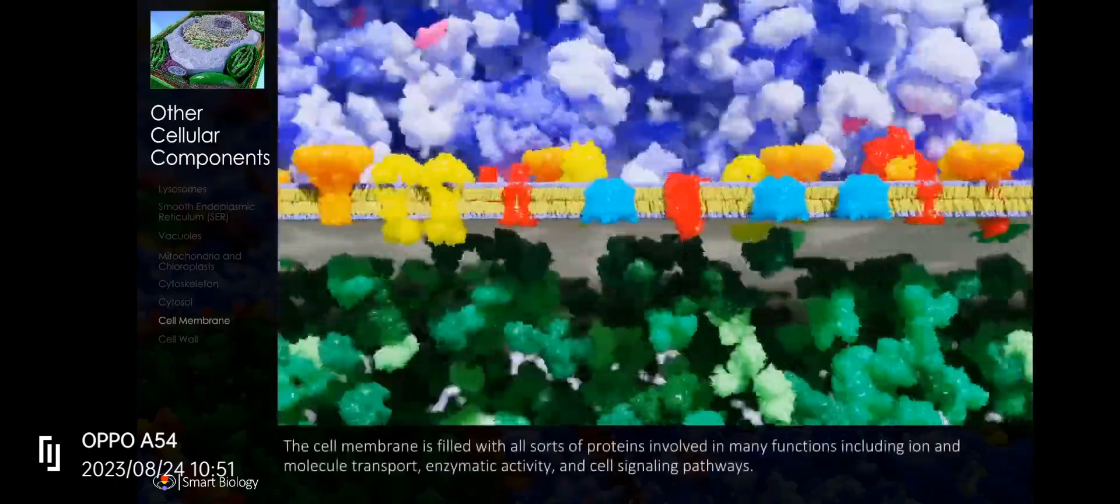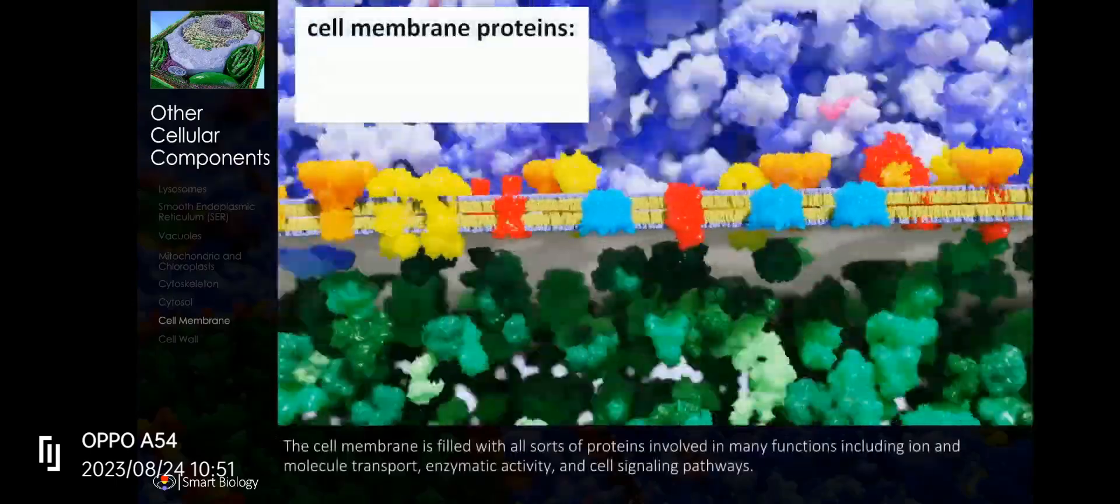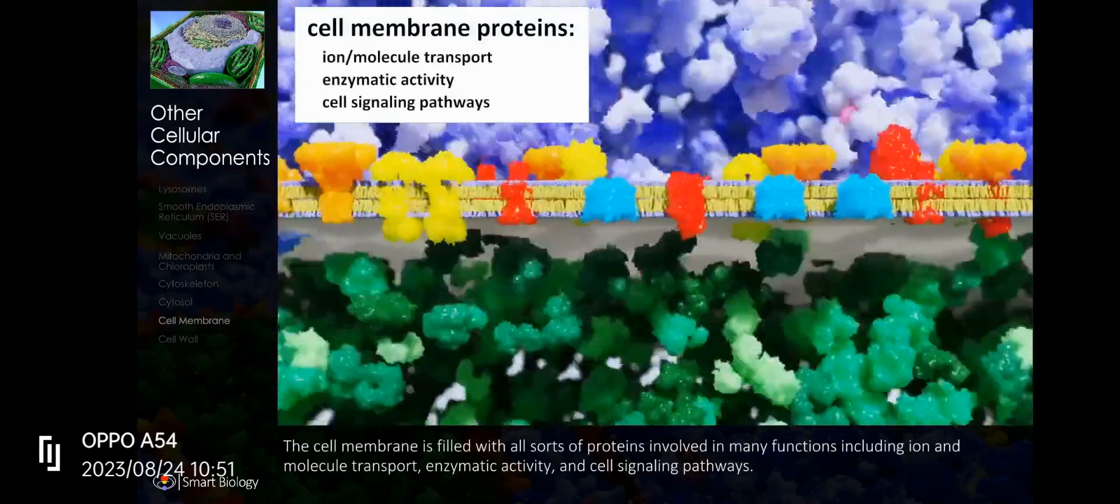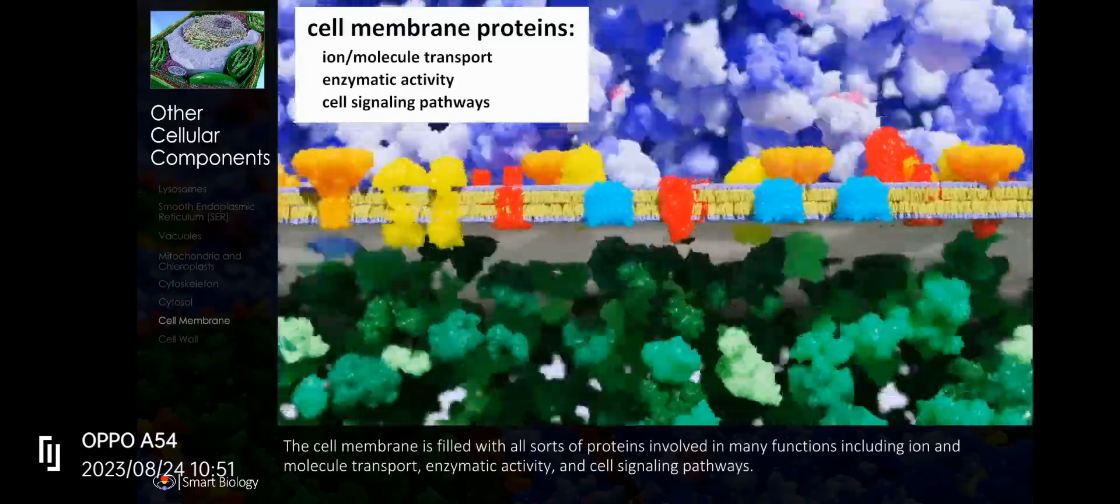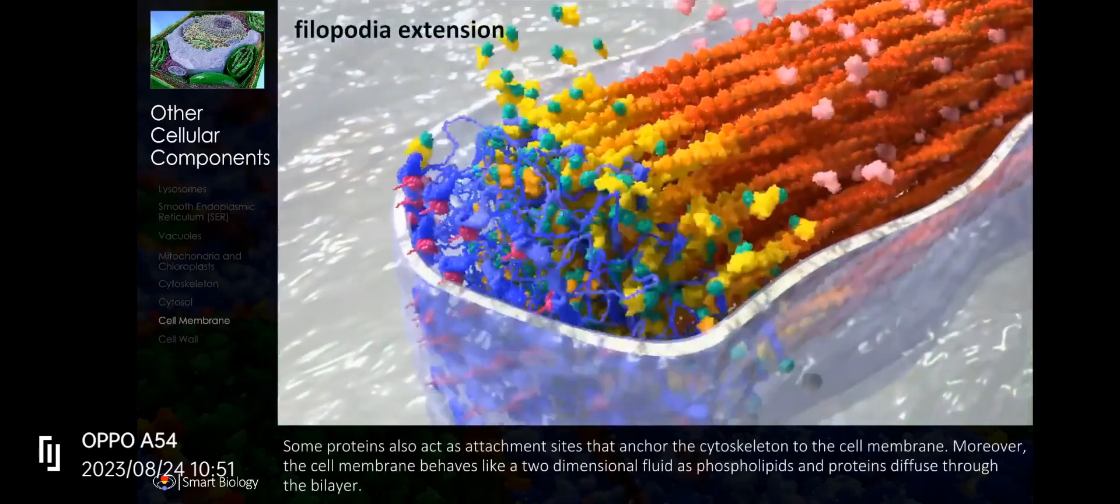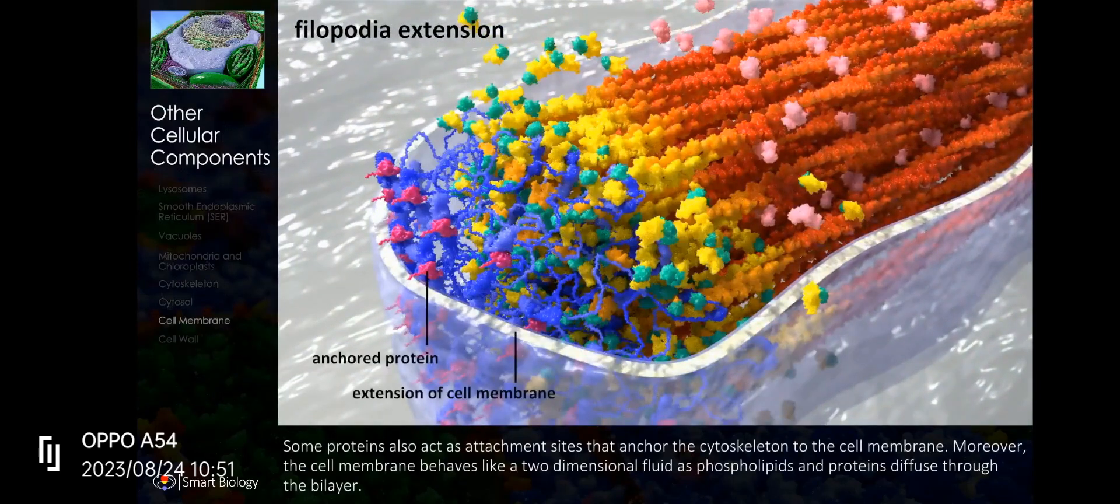The cell membrane is filled with all sorts of proteins involved in many functions, including ion and molecule transport, enzymatic activity, and cell signaling pathways. Some proteins also act as attachment sites that anchor the cytoskeleton to the cell membrane.